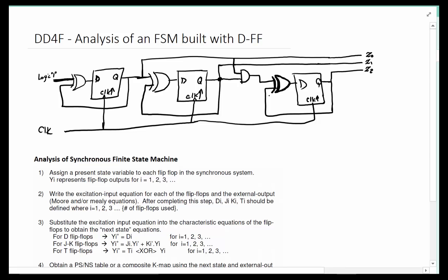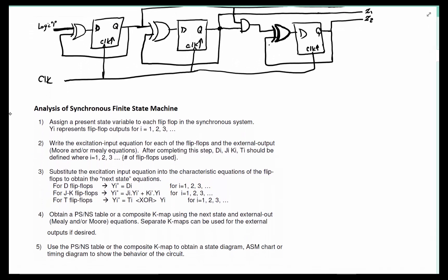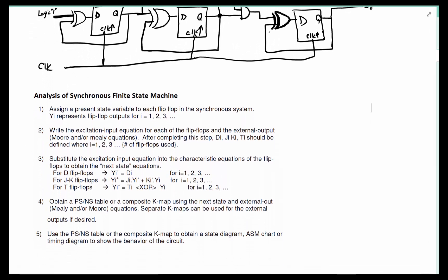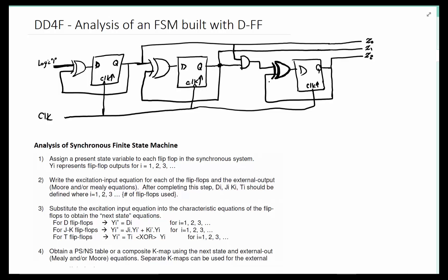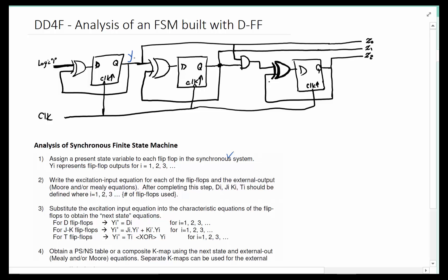In this video we're going to take the five steps to analyze a finite state machine and apply them to this circuit built using flip-flops. The first step in the process is to assign state variables. Since we have three flip-flops and each flip-flop has one output, we need at least three state variables to keep track of them, so we can name them y0, y1, and y2.